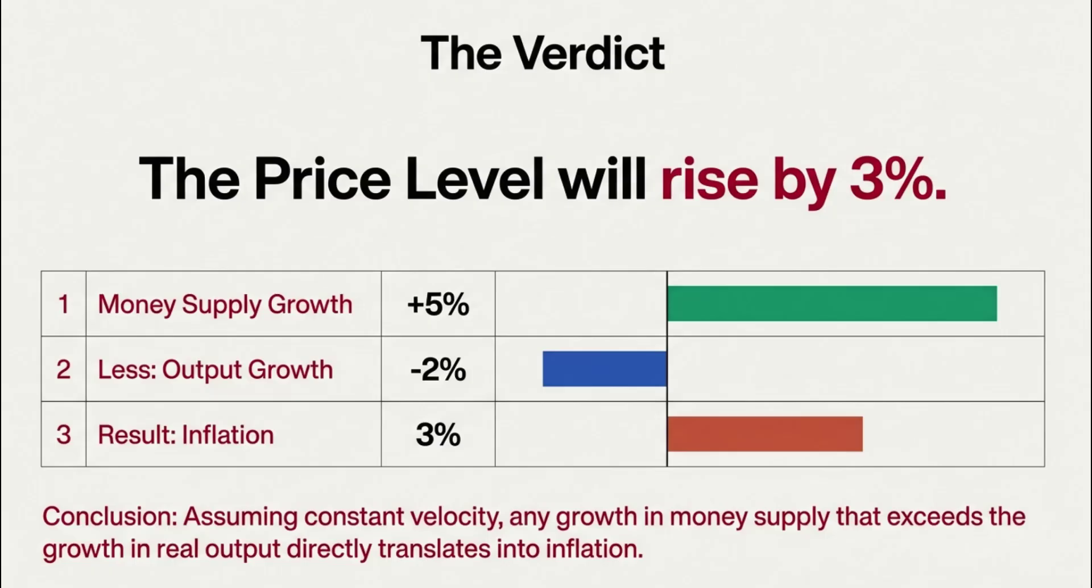This is it. 3%. This is where our quote-unquote extra money went. It didn't just disappear into thin air. And here is the solution to our mystery. That missing 3% wasn't missing at all. It was absorbed right into the economy, showing up as a 3% increase in the overall level of prices. And what's the economic term for a general increase in prices over time? Well, that's inflation. The answer to our puzzle is that the economy experienced 3% inflation.